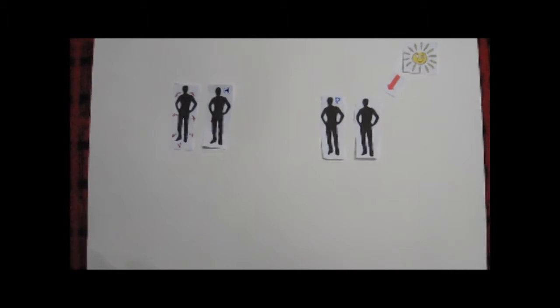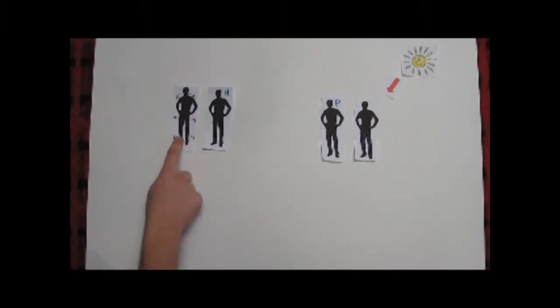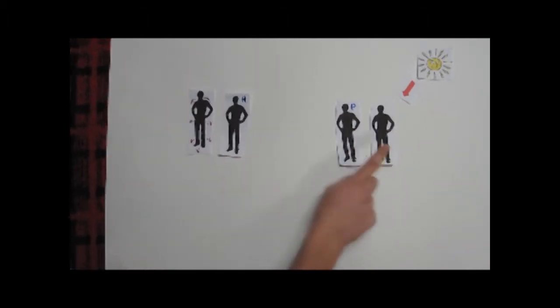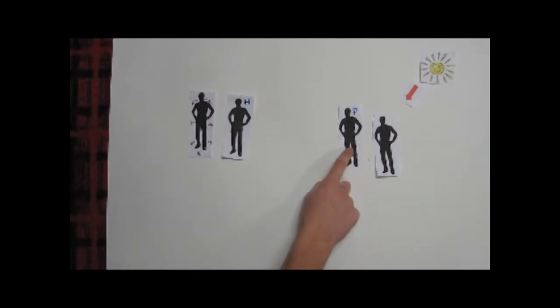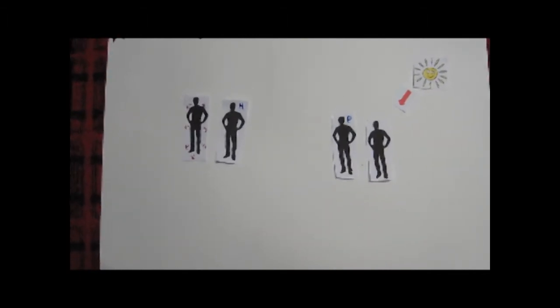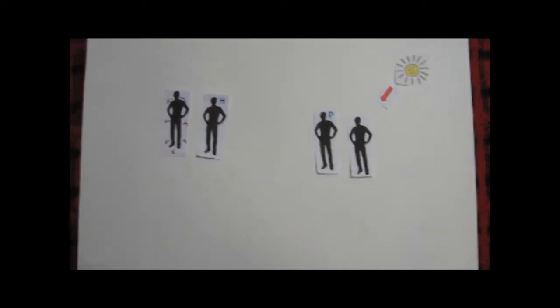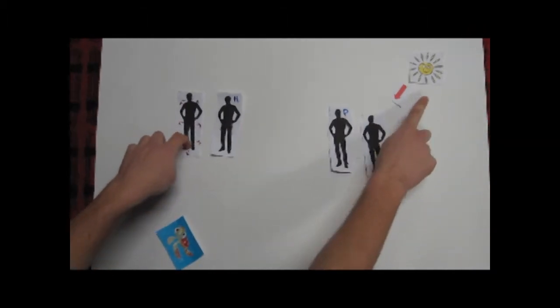Despite what many people believe, an endothermic animal isn't necessarily a homeotherm, and an ectothermic animal isn't necessarily a poikilotherm. There is no fixed relationship between the source of heat and the stability of body temperature.